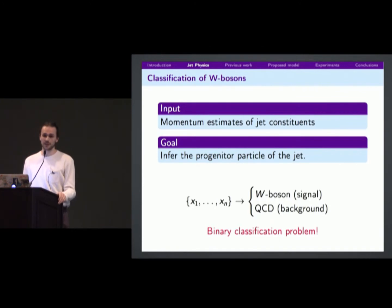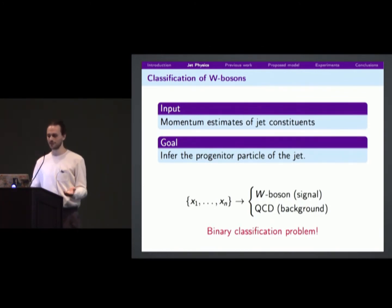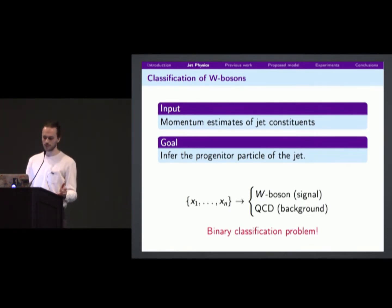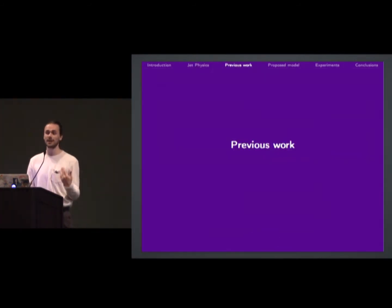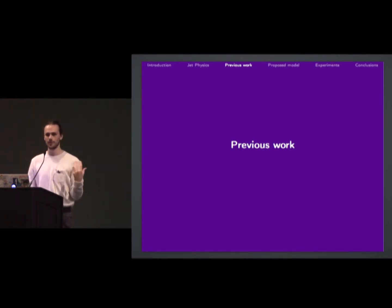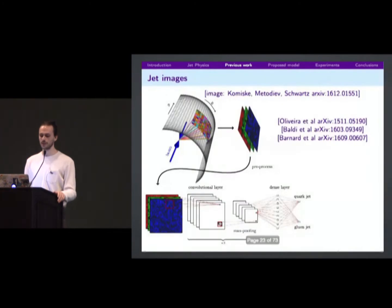This is just a binary classification problem — bread and butter for people in machine learning. You can use a lot of different ideas to solve it. I'll look at some previous analogies and ways people have applied machine learning to this problem.